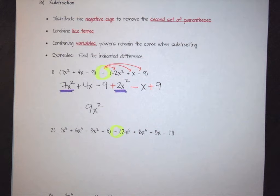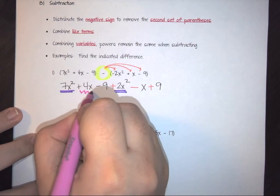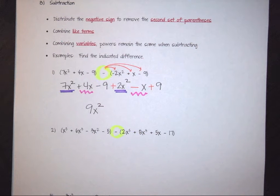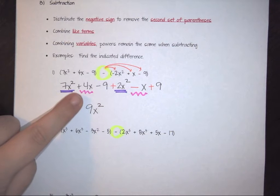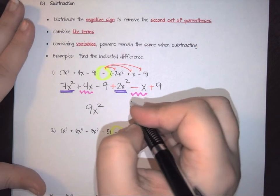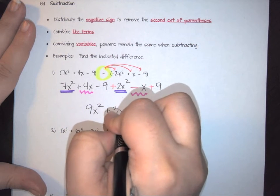I then have to look at my next term here. I have a x. And here I have an x. So again, I need to combine those together. So I have a positive 4 and a negative 1. So 4 minus 1 is going to give me a plus 3x.